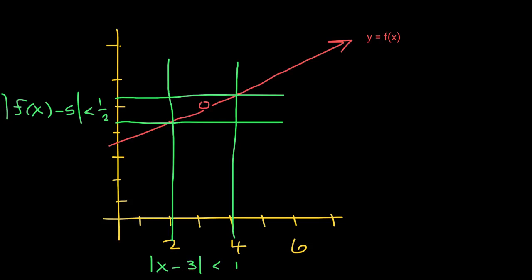The distance between my function values and 5 will be less than one half unit, as long as the distance between x and 3 is less than one. This value, one half, we're going to call epsilon. And the number we had to find is going to be called delta.